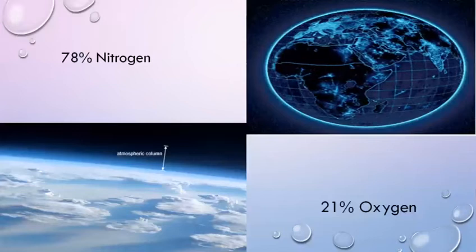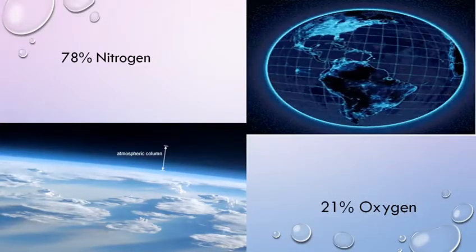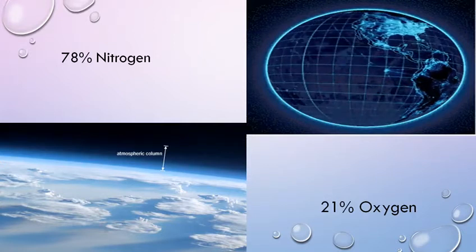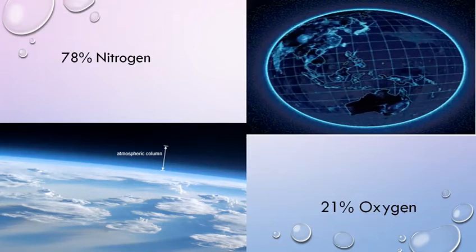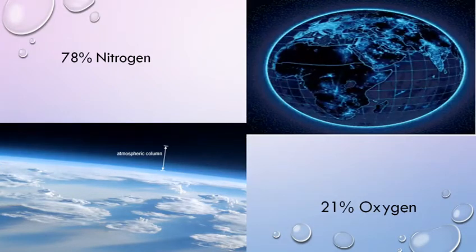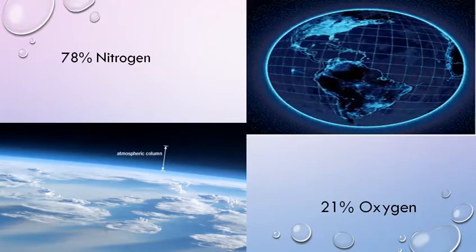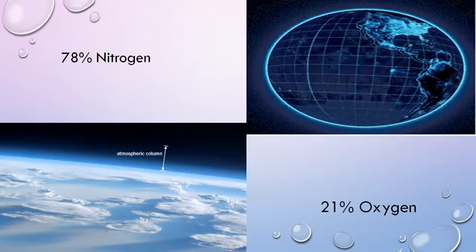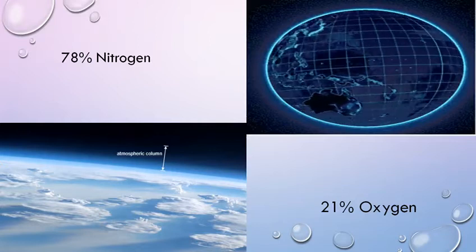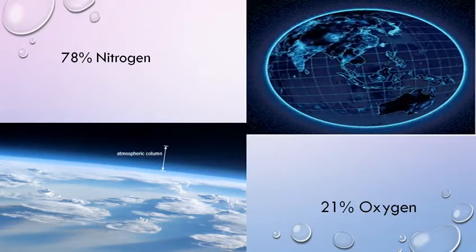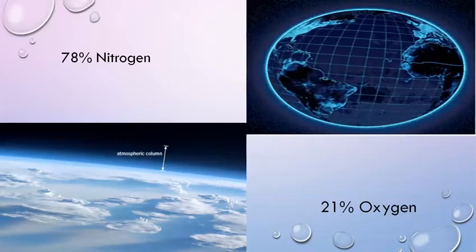Air is a mixture of different gases. Earth's atmosphere is made of many gases. Atmosphere means the area that is surrounding the blue planet Earth. It has 78% of nitrogen and 21% of oxygen. The rest 1% is of gases like neon, carbon dioxide, hydrogen, etc.